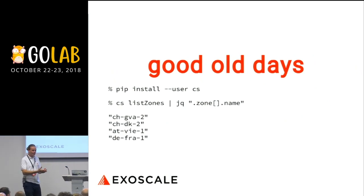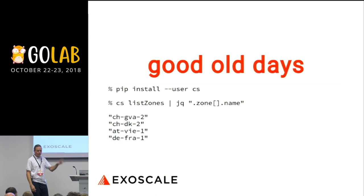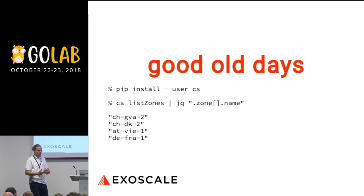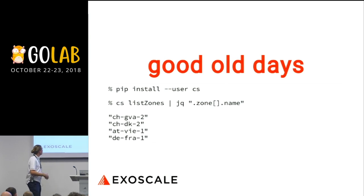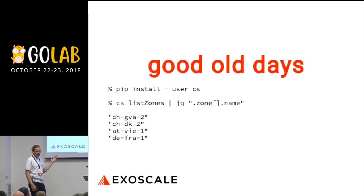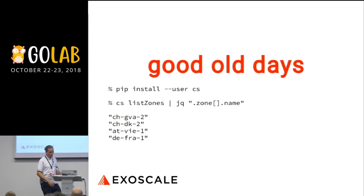Before we had this CLI, we were using the API directly. The API is a CloudStack-based cloud platform — you send HTTP requests and you get JSON responses. All the tools we were using hit this raw API, and you know, to use it, you have to be kind of a power user. You need to know the cost, know how to parse things. So in the good old days, we still have the Python client, and this Python client has very low knowledge of what's going on.